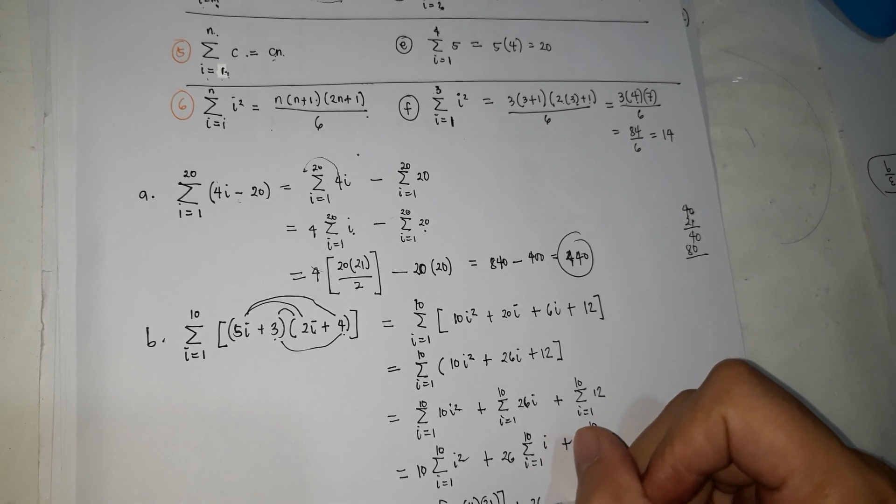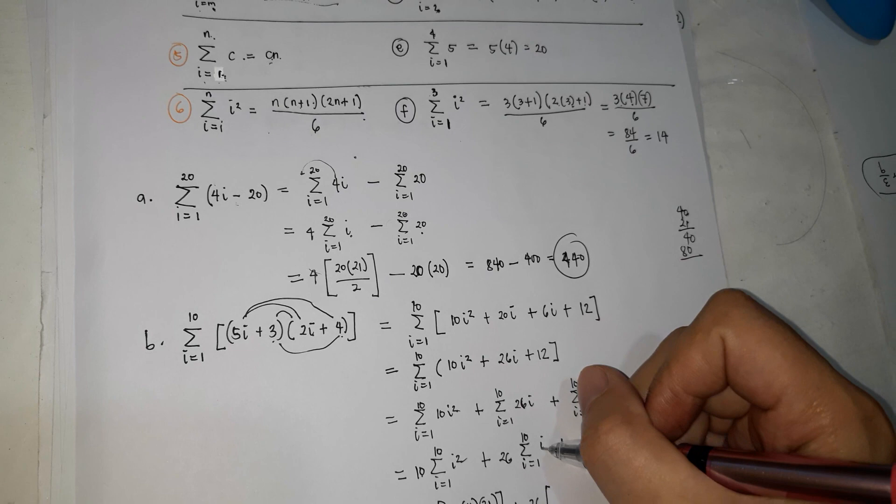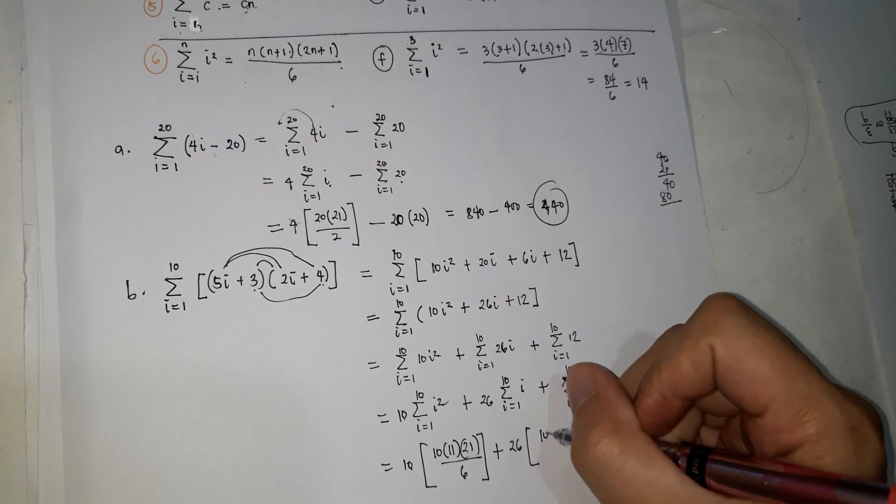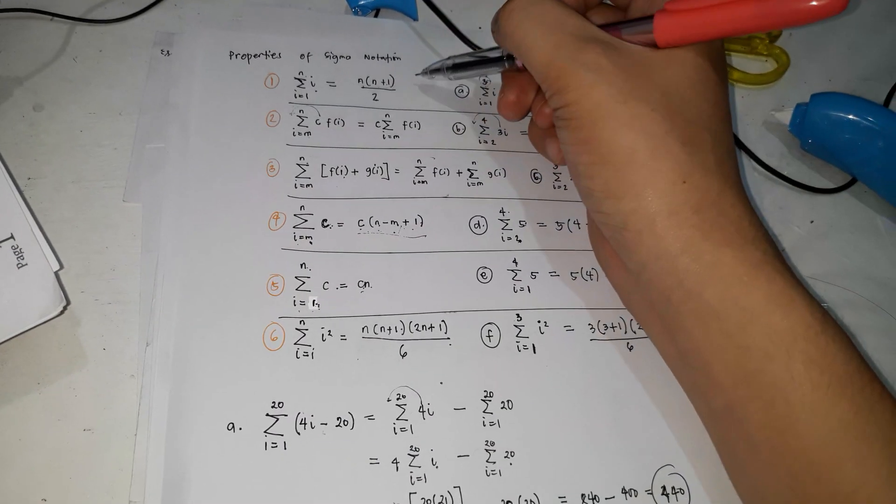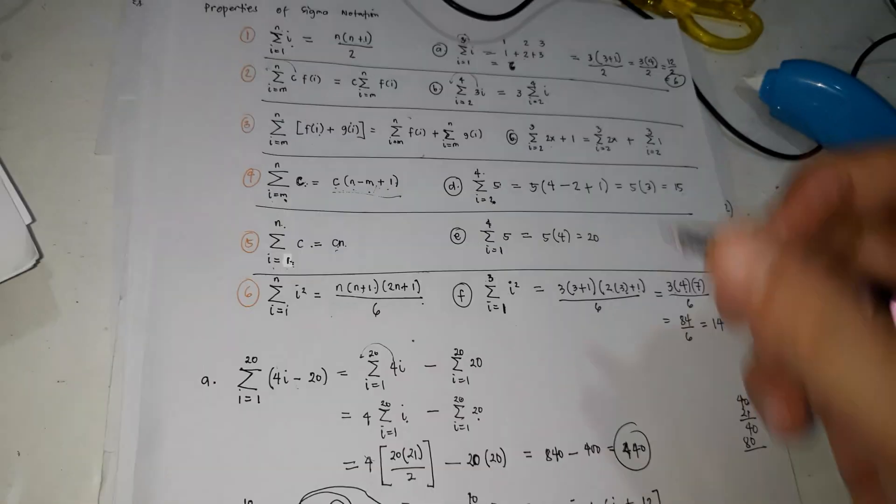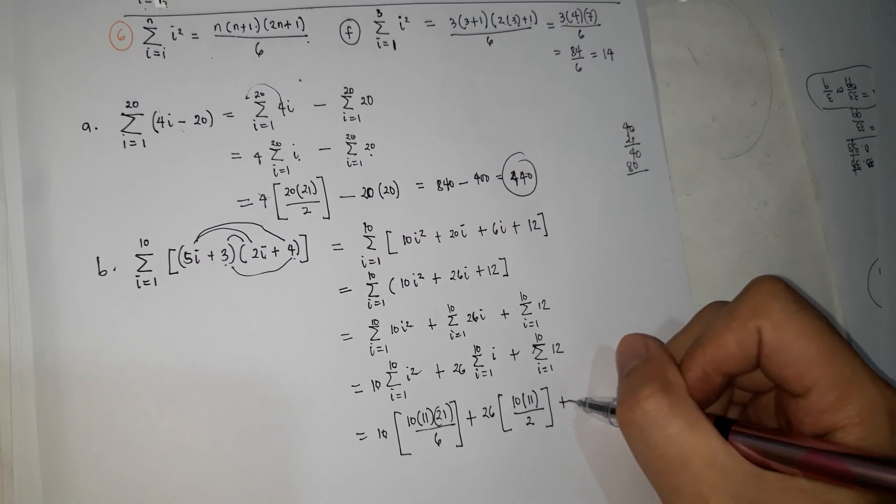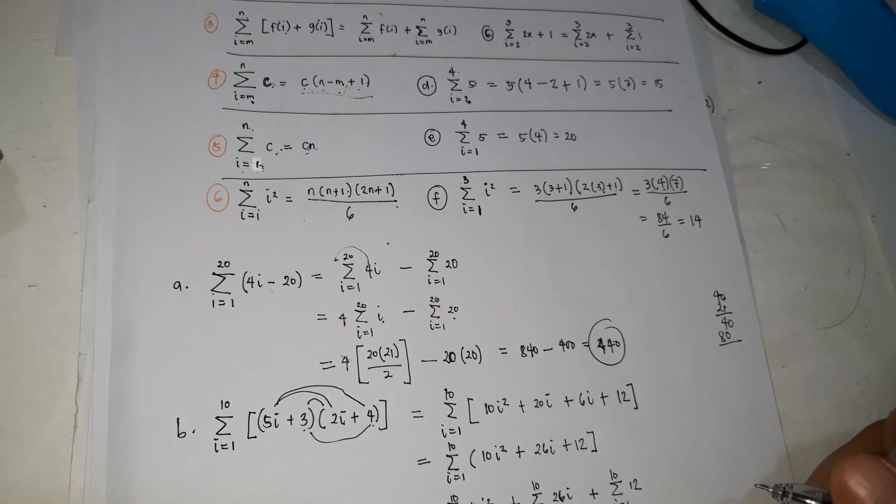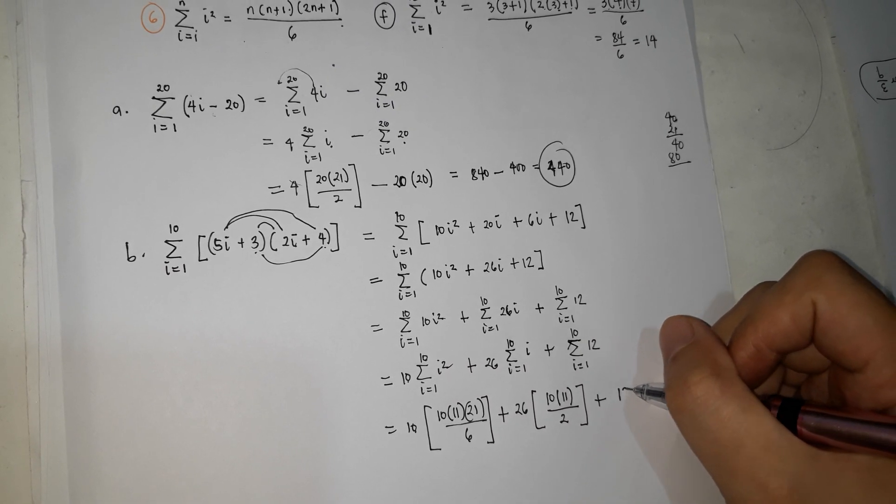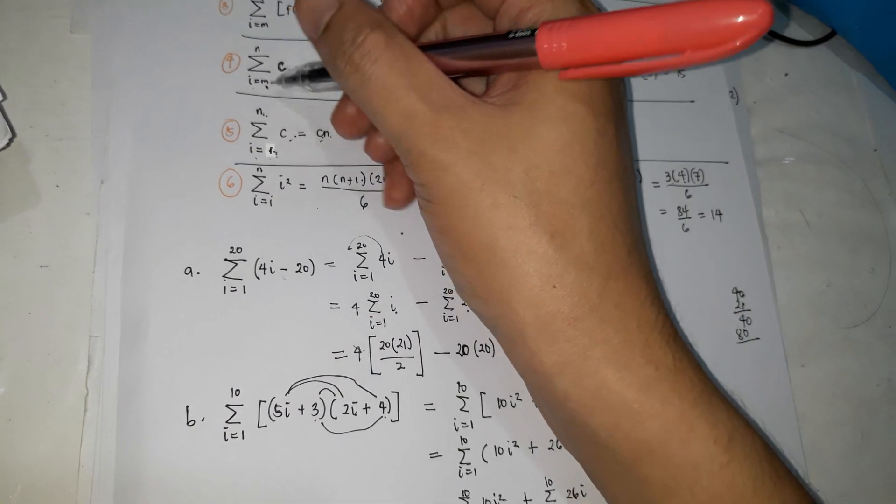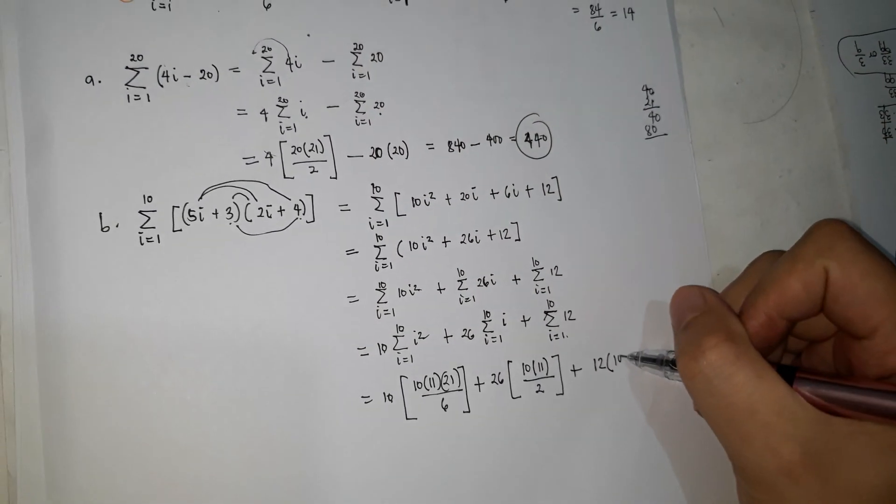plus 26i. Kapag may i, ano nga ang formula na gagamitin? Ito siya. So ang n magiging 10. So 10 plus 10 plus 1, 11, over 2, plus, yung may constant lang, ganito ang gagamitin kapag constant lang. So magiging 12 times n, kasi from 1 to 10. So times n lang siya ng n.